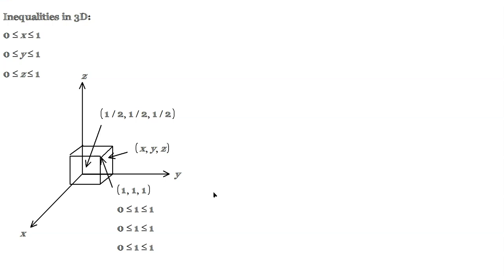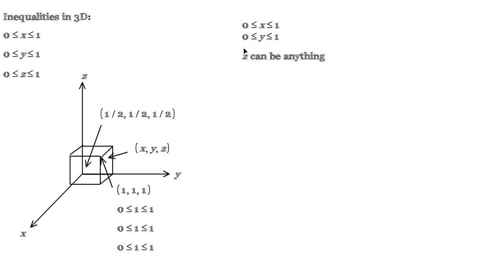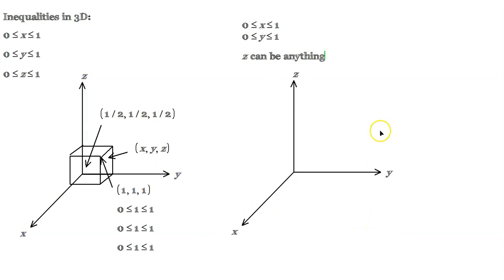This is one possibility. Let's do another one. Imagine we have 0 is less than or equal to x, which is less than or equal to 1, and 0 is less than or equal to y, which is less than or equal to 1, but then z can be anything — there's no restriction on z anymore. How do you visualize that? Well, draw a coordinate system. There are restrictions on x and y that you have to impose.